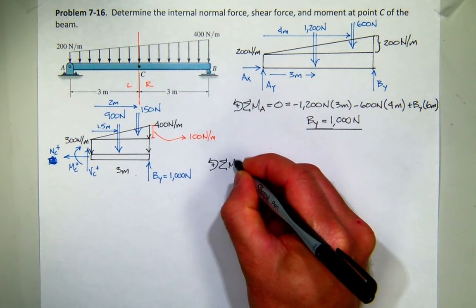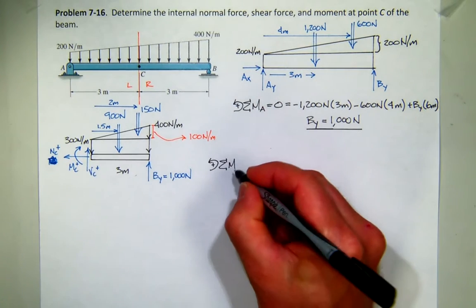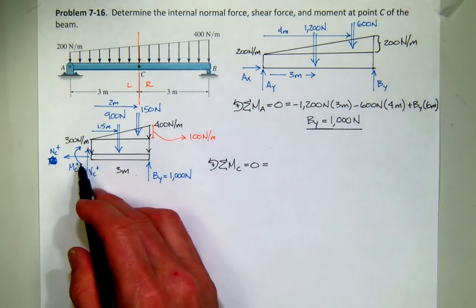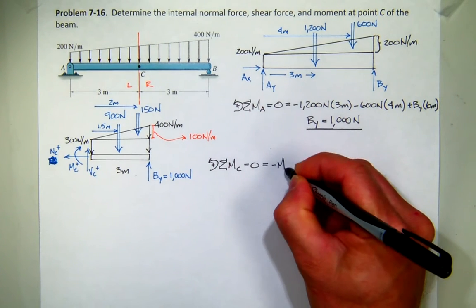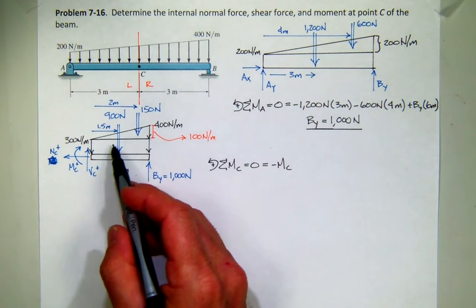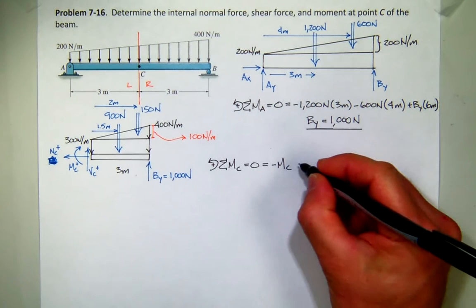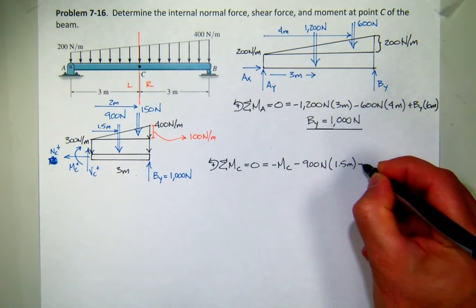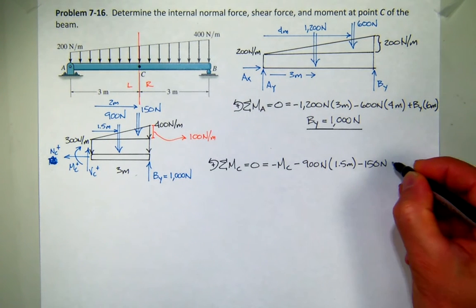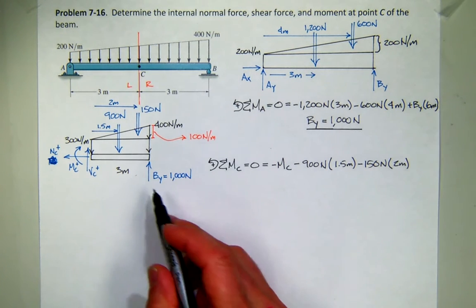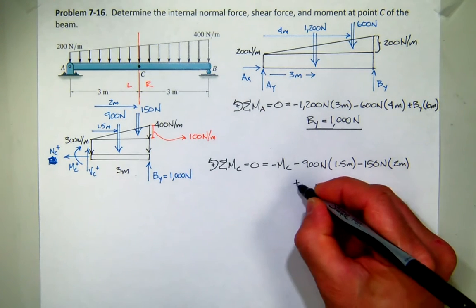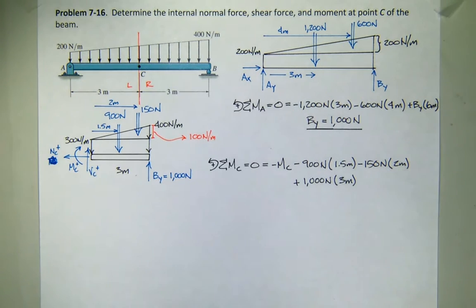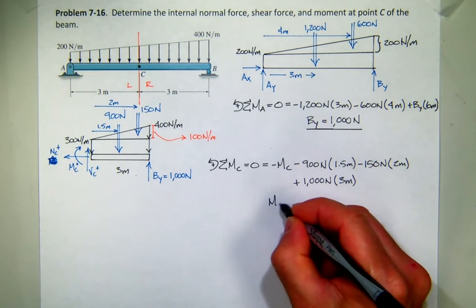So it's probably a good thing to start by summing moments at the cut. In this case, it's point C, making sure things are in equilibrium. So with right-hand rule, my moment sign convention, my internal moment here MC is actually negative. And then I have both these forces creating negative moment. So I have minus 900 newtons times a moment arm of 1.5 meters, minus 150 newton times a moment arm of 2 meters. And my reaction BY, which is positive, which is 1,000 newtons, times a moment arm of 3 meters.